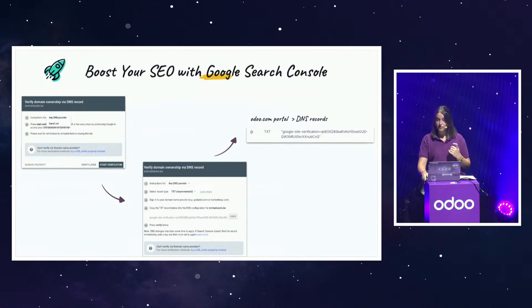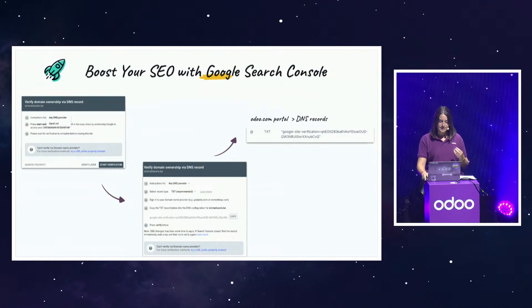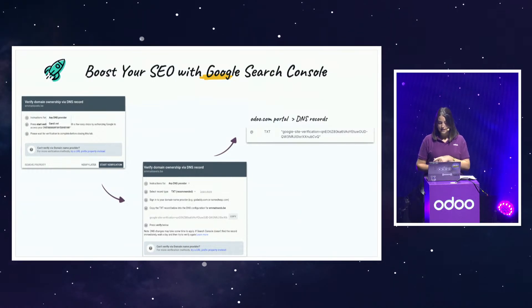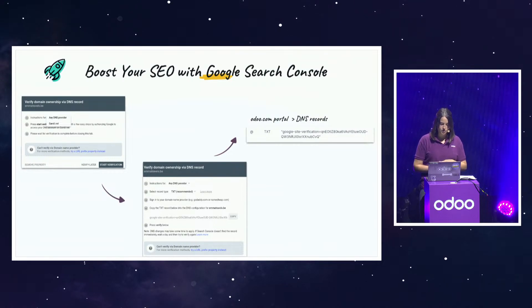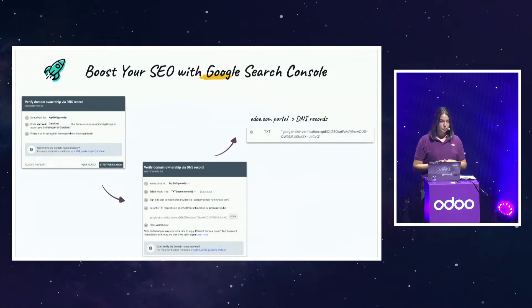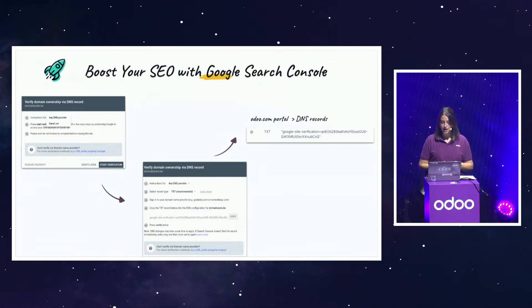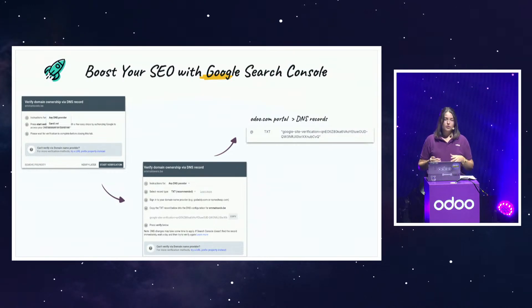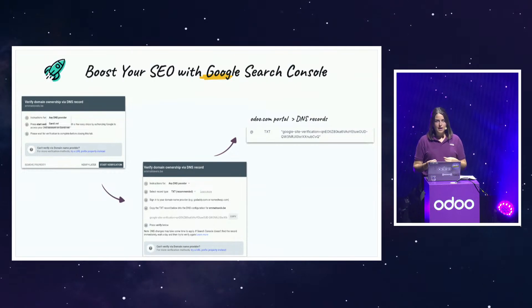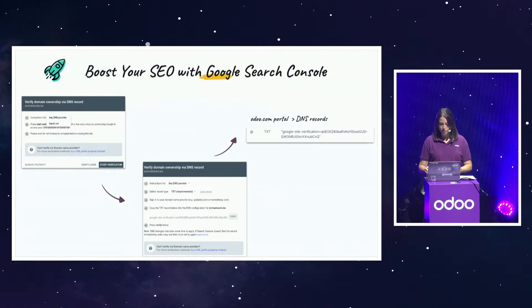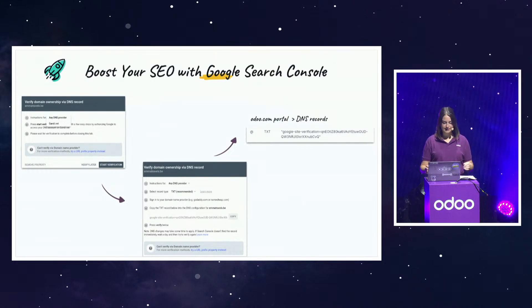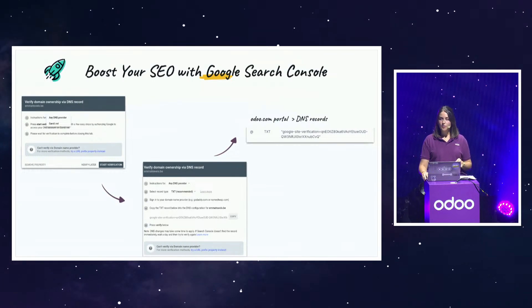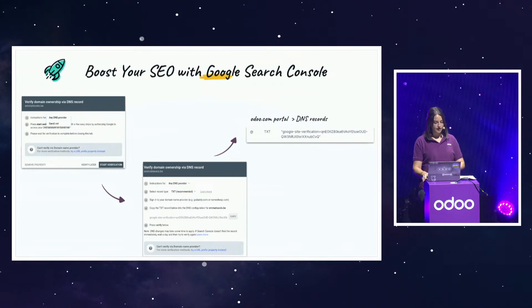In Google Search Console, you can access various reports that provide insight into your website performance. Key reports include performance reports that track metrics like clicks and the average position of your site in Google Search; coverage reports that show how well Google is indexing your site's webpages and highlight any issues; mobile usability reports; and site map reports. Note that you will receive some reports by email, and not all of them are useful and relevant, but you can look for what is needed for your business. After configuring Google Search Console, note that it may take up to 48 hours for data to appear in these reports.